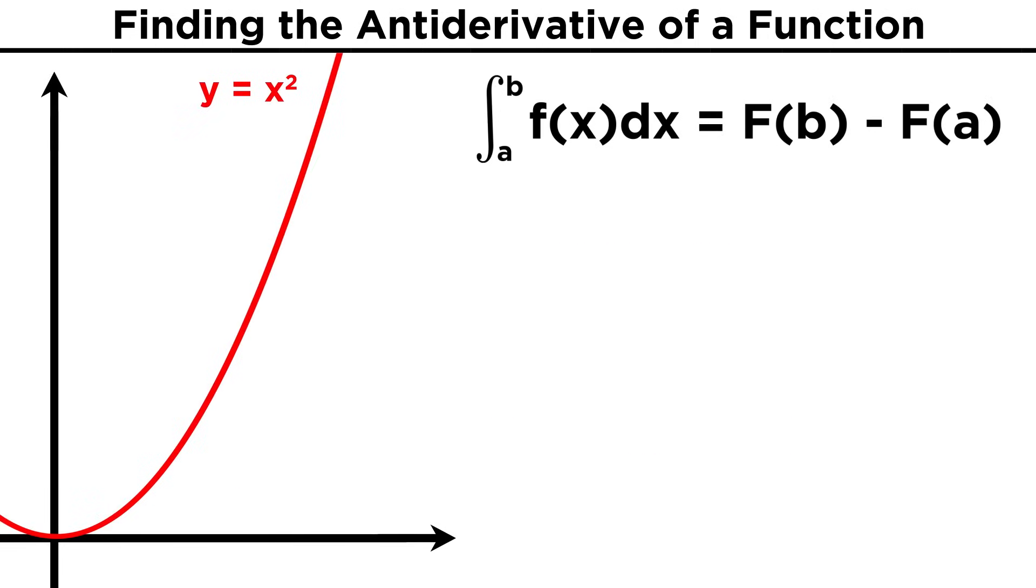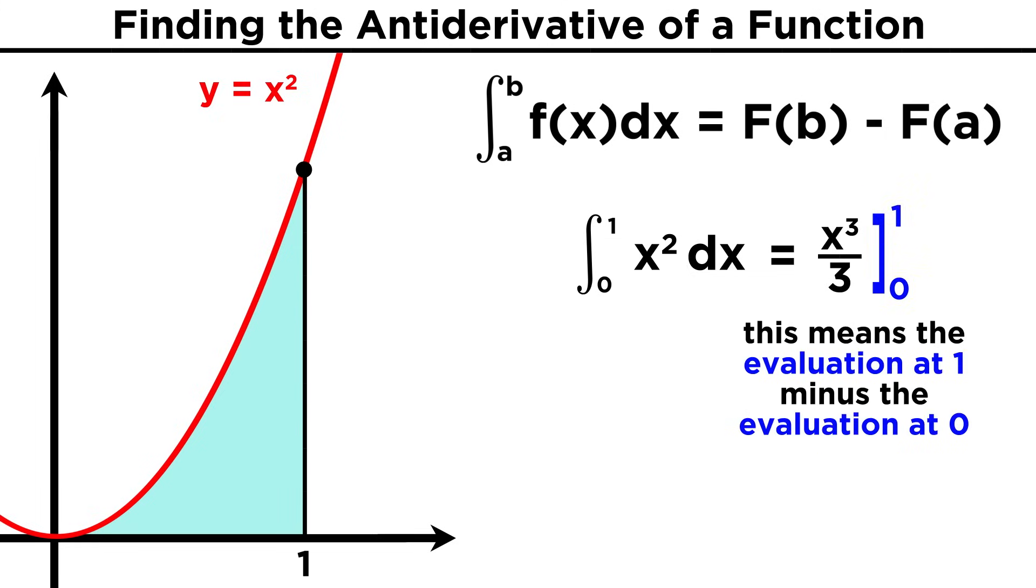So to contextualize this new definition of integration, say we bring back our x squared curve, and integrate from zero to one. That will be equal to the antiderivative evaluated at one minus the antiderivative evaluated at zero. That's what is meant by this notation, with either a vertical line or a closed bracket. It means evaluate this function for the number on top, and then subtract from that the evaluation for the number on the bottom.